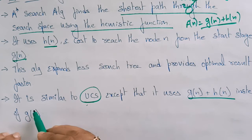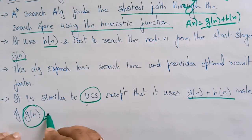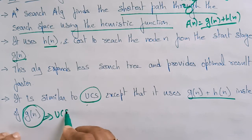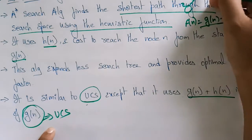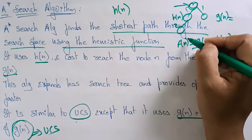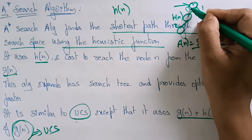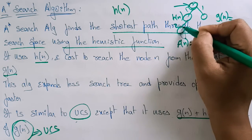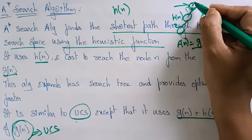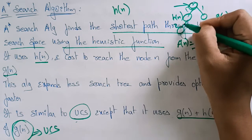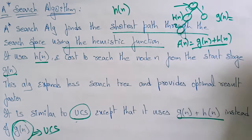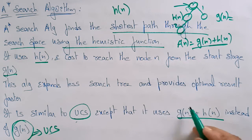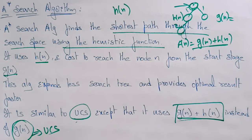The difference is that uniform cost search uses only g(n), where g(n) means you calculate the cost of that particular node from the start node. But in the A star algorithm you need to calculate g(n) plus h(n) as well.